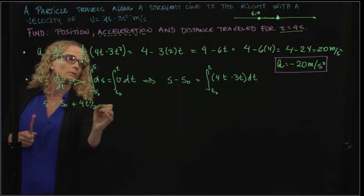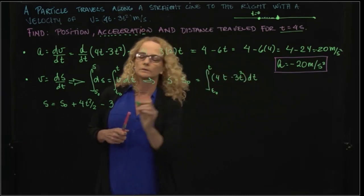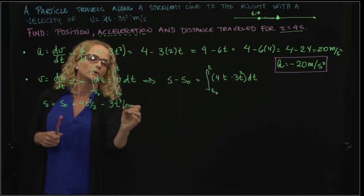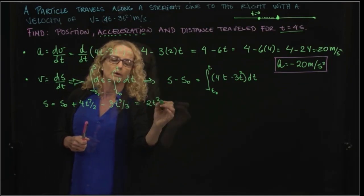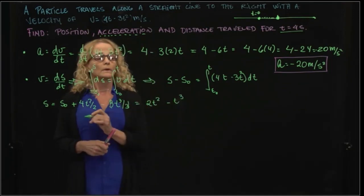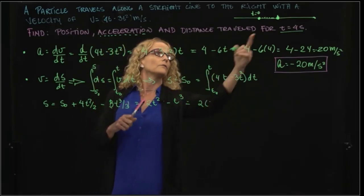4t² over 2, minus 3, this is t³, so it's 3t³ over 3. We evaluate that in 4 seconds.